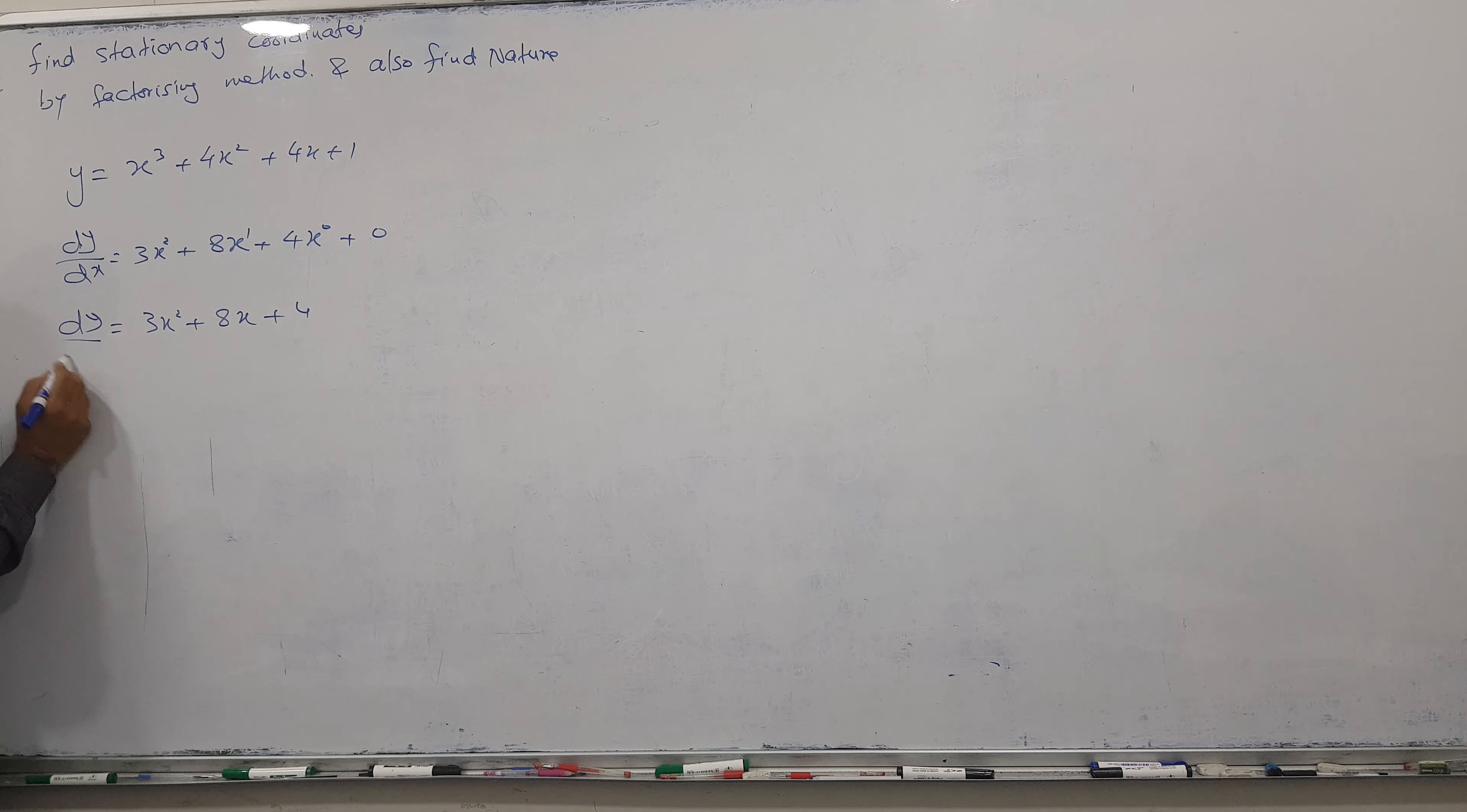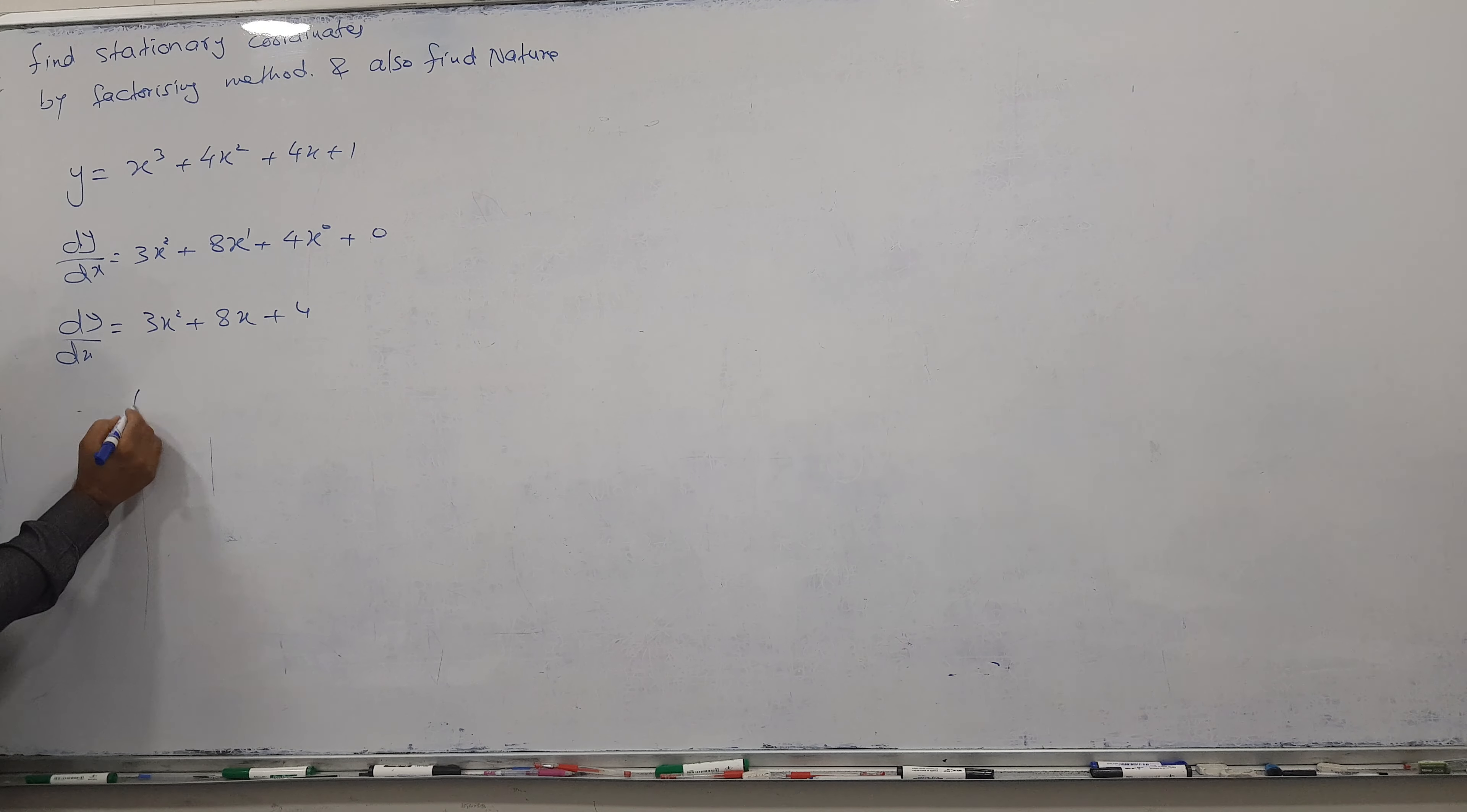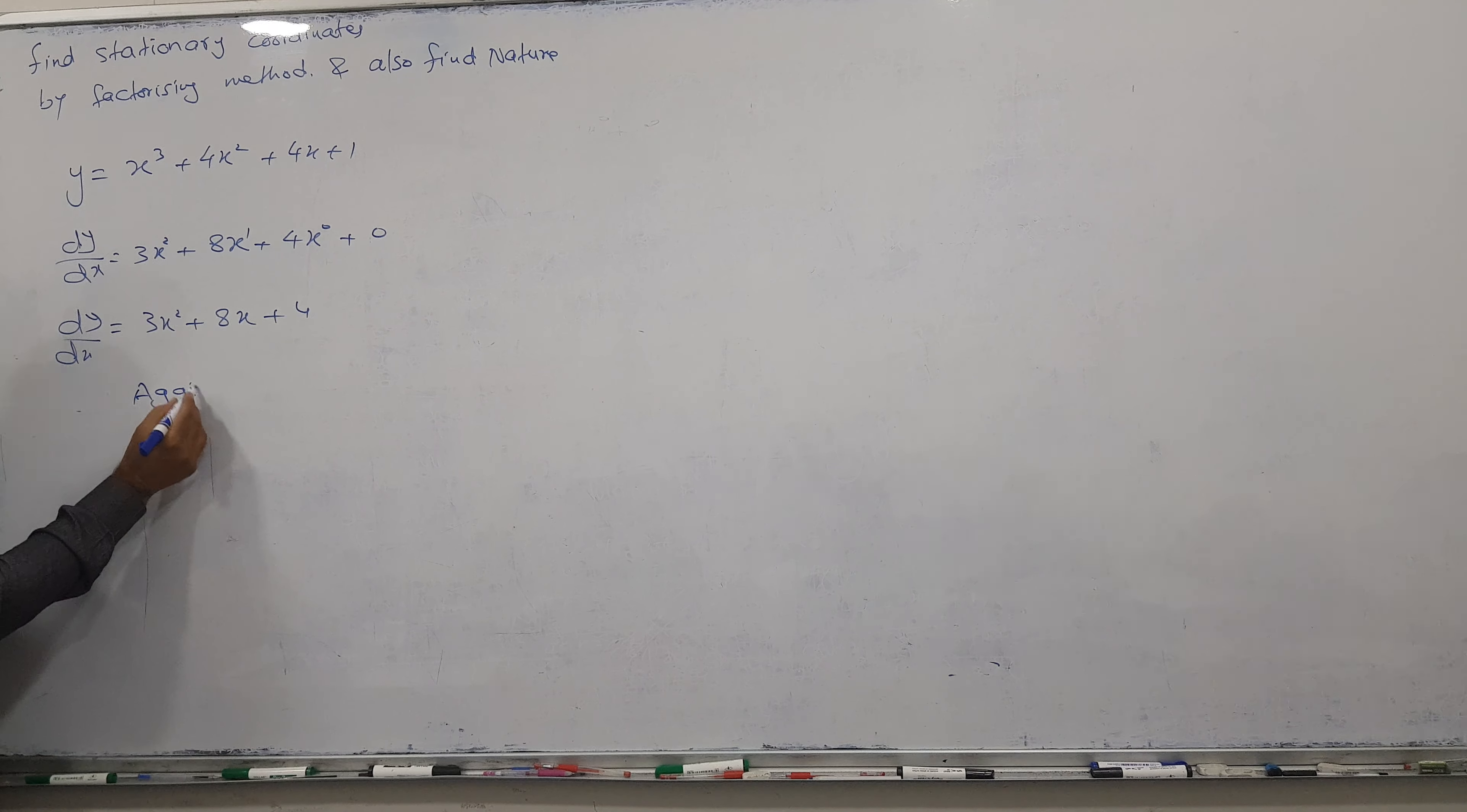Now I can do the second derivative. d²y/dx²: this power comes down, I got 6, and power reduced by 1. This has no power means 1, so 1 times 8 and power becomes 0. The 4 has 0 derivative. My second differentiation final step: 6x + 8. So this is my first derivative and this is my second derivative.